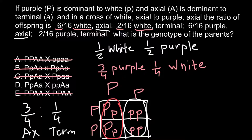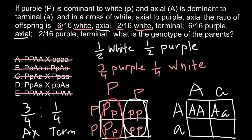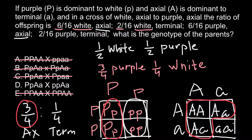And of course, if we cross these two genotypes — one heterozygous (Aa) with another heterozygous (Aa) — in the progeny we can expect the following ratio: AA, Aa, Aa, aa. That gives us three quarters axial position and one quarter terminal position of the flower. This matches perfectly, so answer D is the correct answer.